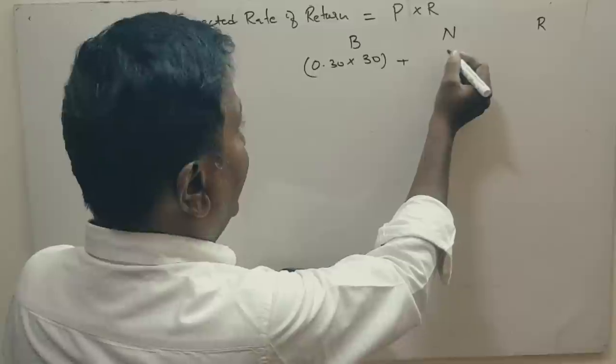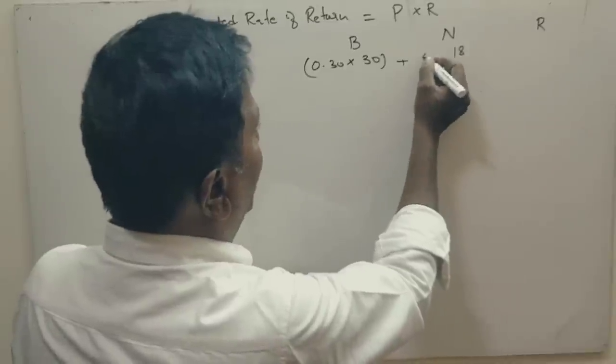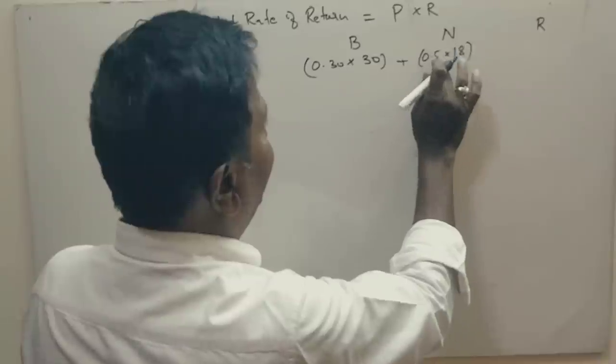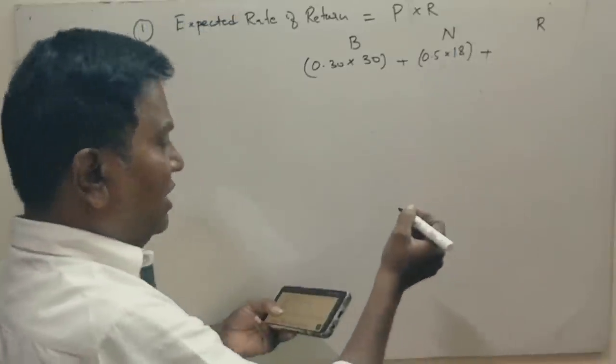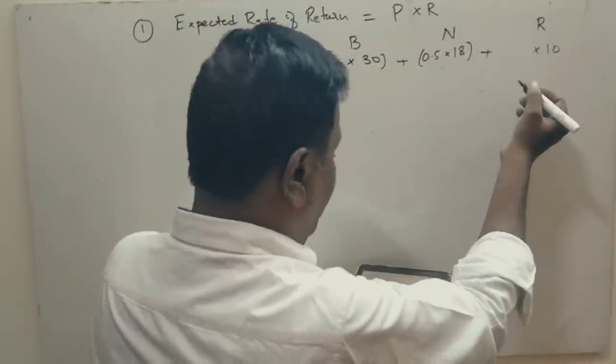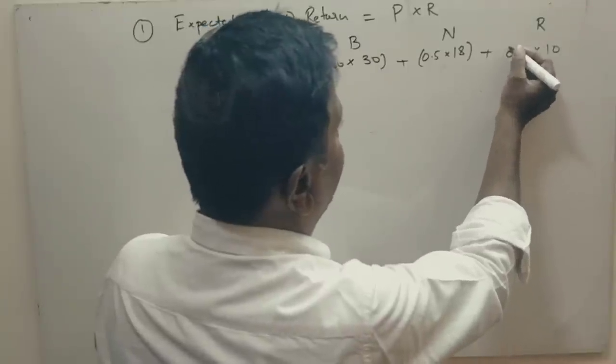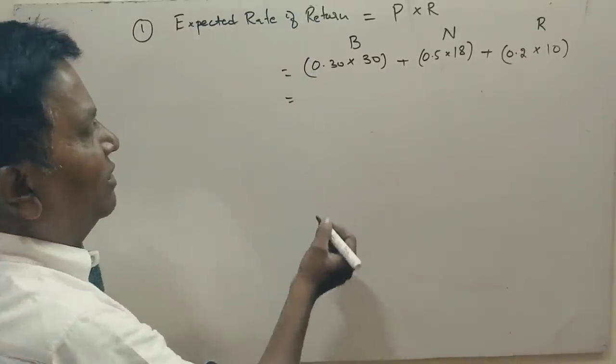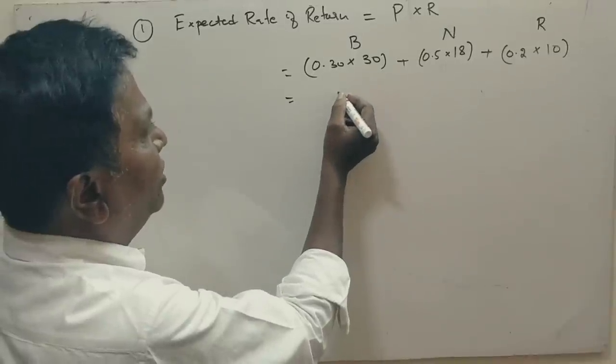And return is 18 rupees. And probability of getting is 50%, 0.5. Plus, return in case of recession is 10. The probability of getting is 0.20. Now, what is the expected return? Is, how much you get?